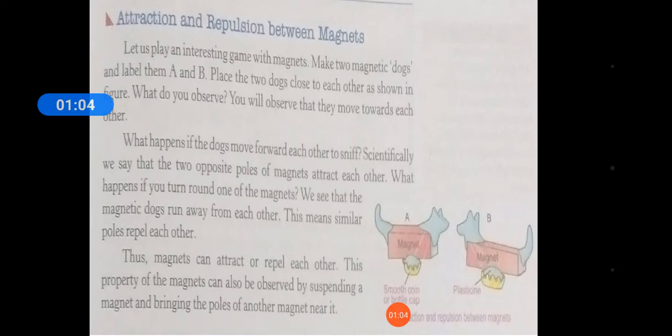And when they changed the direction, placing south with south, the magnets repelled each other. So they explained that attraction means when they join together, and repulsion means when they push away from each other.